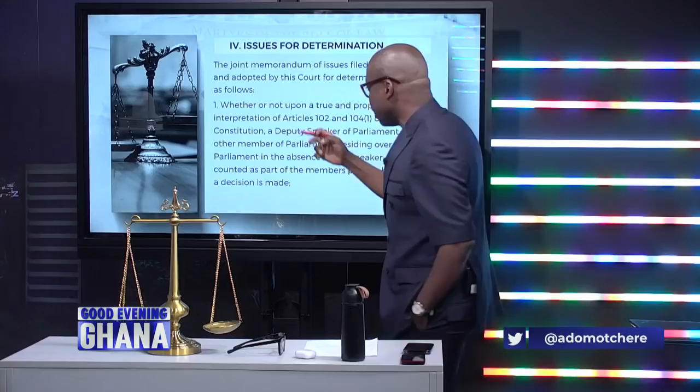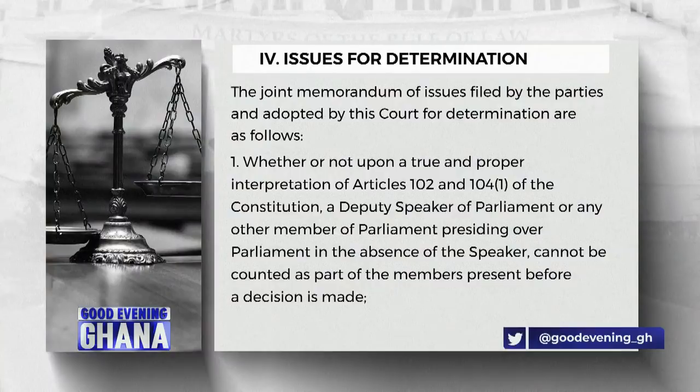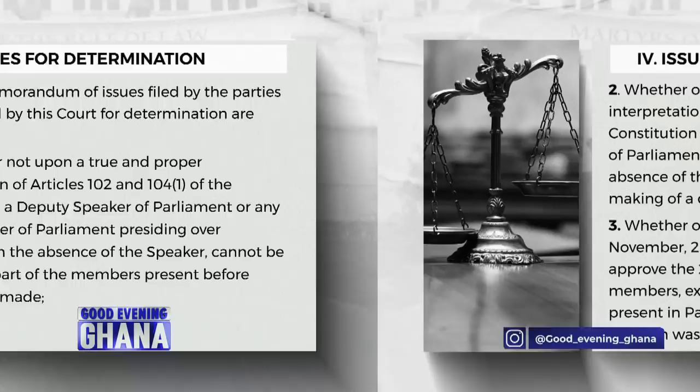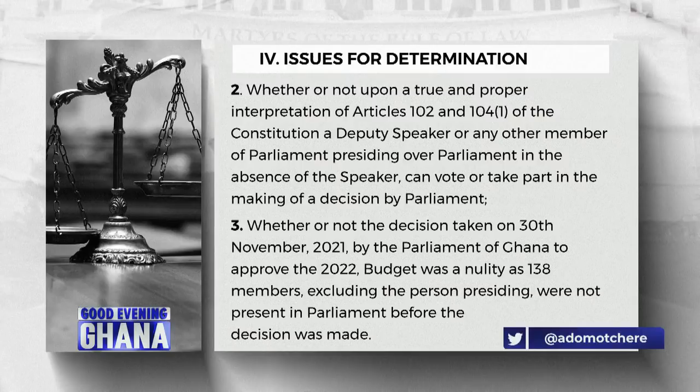Issue number one: whether or not upon a true and proper interpretation of Articles 102 and 104 of the Constitution, a deputy speaker of parliament or any other member of parliament presiding over parliament in the absence of the speaker cannot be counted as part of the members present before a decision is taken. Issue number two: whether upon such interpretation, a deputy speaker or any other presiding member can vote or take part in the making of a decision by parliament.